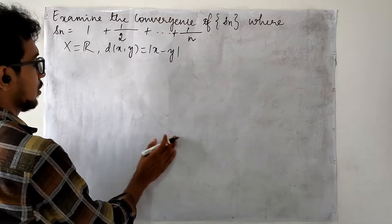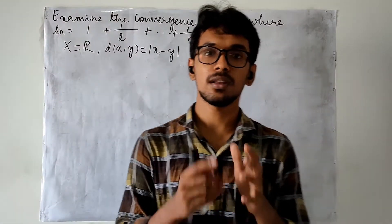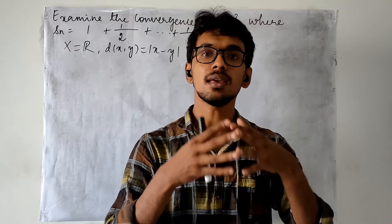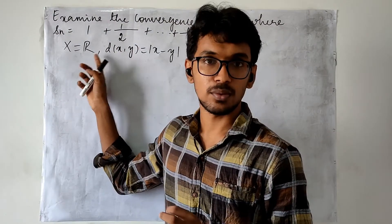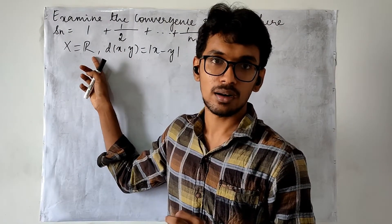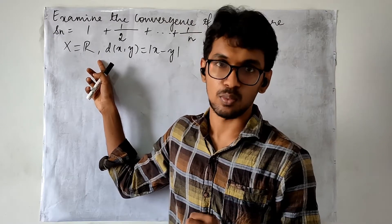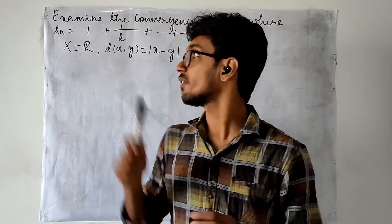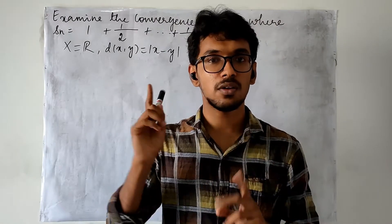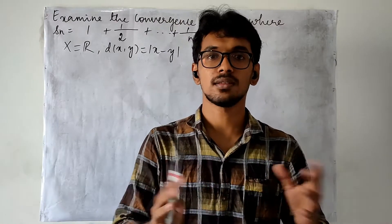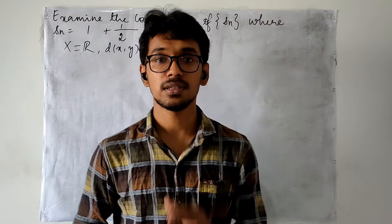In order to check the convergence of a particular sequence in the metric space R, this is the standard Euclidean metric space with K value 1. Therefore it is enough to verify whether the given sequence is Cauchy or not. If the sequence is Cauchy then it is convergent — that is what we have seen in the Cauchy criterion for convergence.